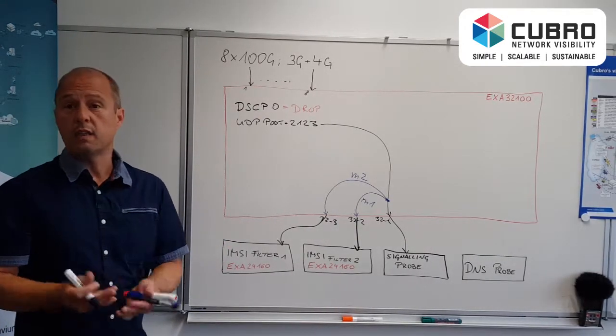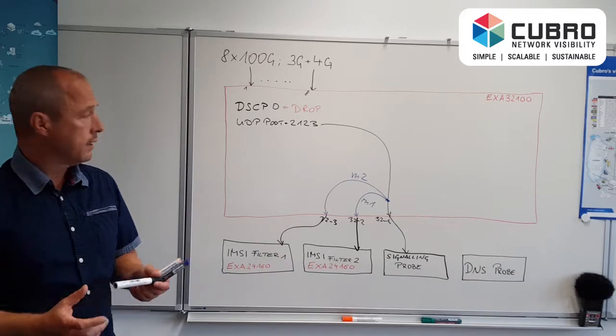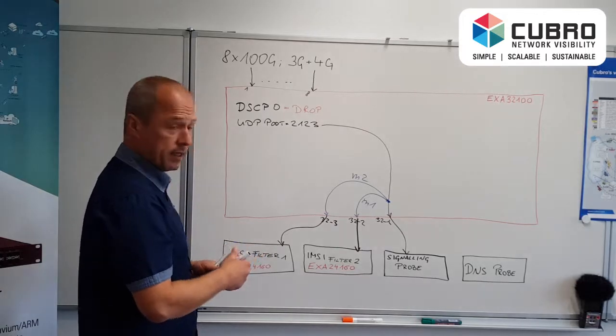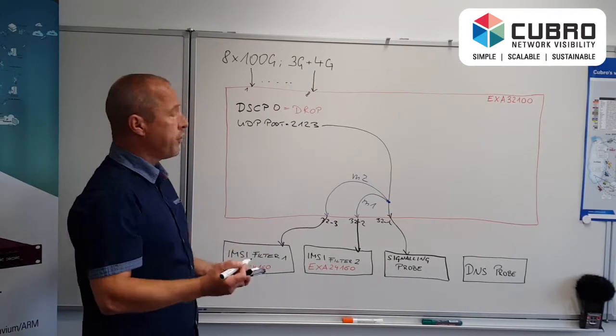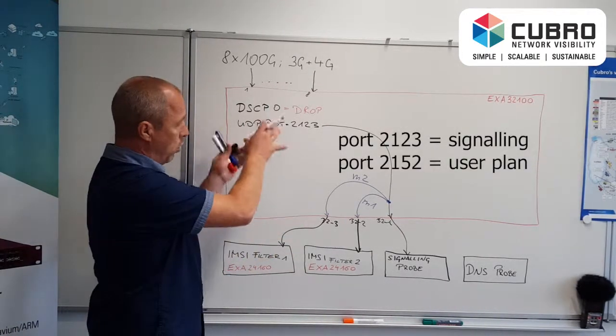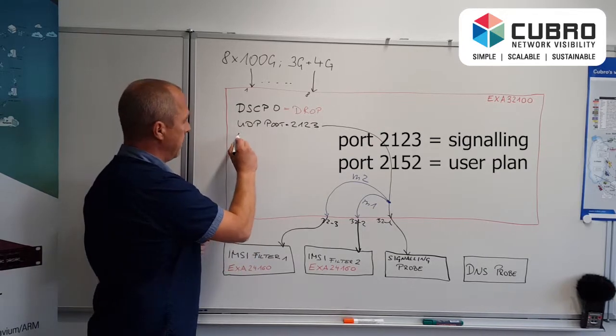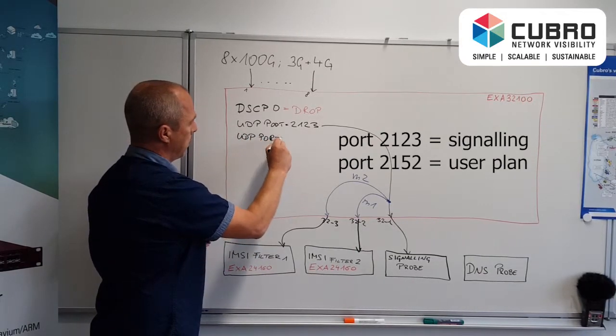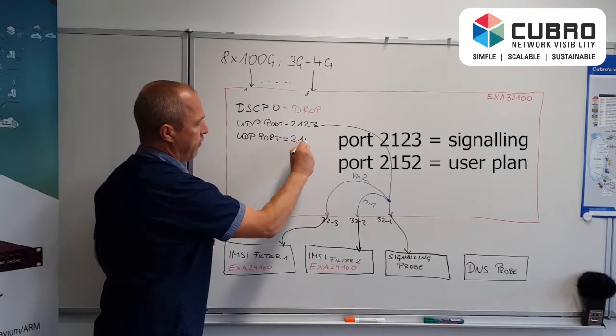The next thing is, of course, we need user traffic. The difference between user and signaling is the traffic volume, of course. User traffic is much, much higher. So first thing is, I need to filter out from the whole traffic. I can do again, UDP port filter. And it's the 2152.